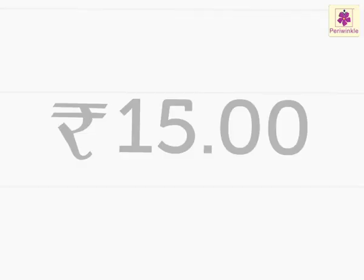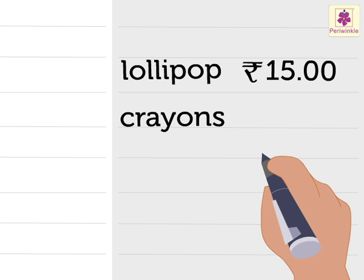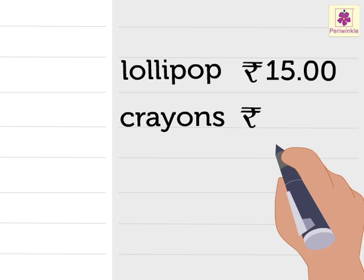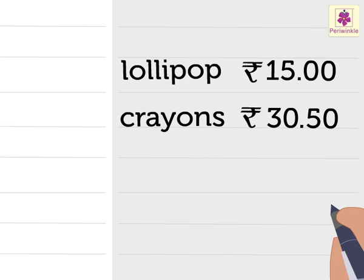Now, Saira is writing the money spent on crayons. First, she writes the symbol of rupee. Then, the number 30. Then, a dot. And lastly, she writes the number 50. We read this as 30 rupees, 50 paise.